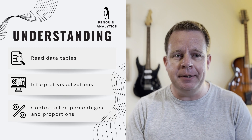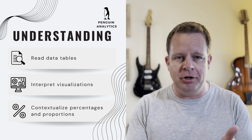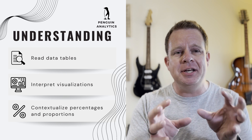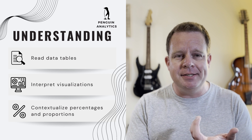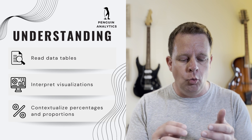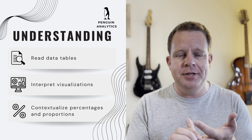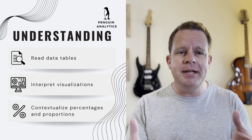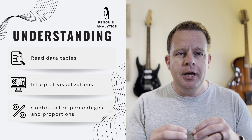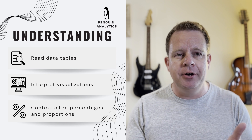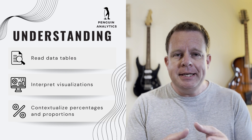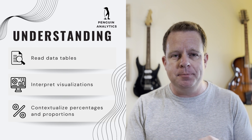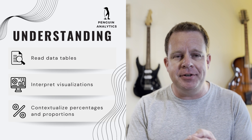We'll start with understanding. The first level is simply knowing what's on the page in front of you — being able to identify what the numbers, columns, and rows are, and what everything means in a data table. You should be able to calculate and conceptualize percentages and ratios — what is it a percentage of, what are the two things being compared? The same applies to proportions. You should also be able to interpret data visualizations such as line graphs and bar charts, and understand what to look for and how they were put together.